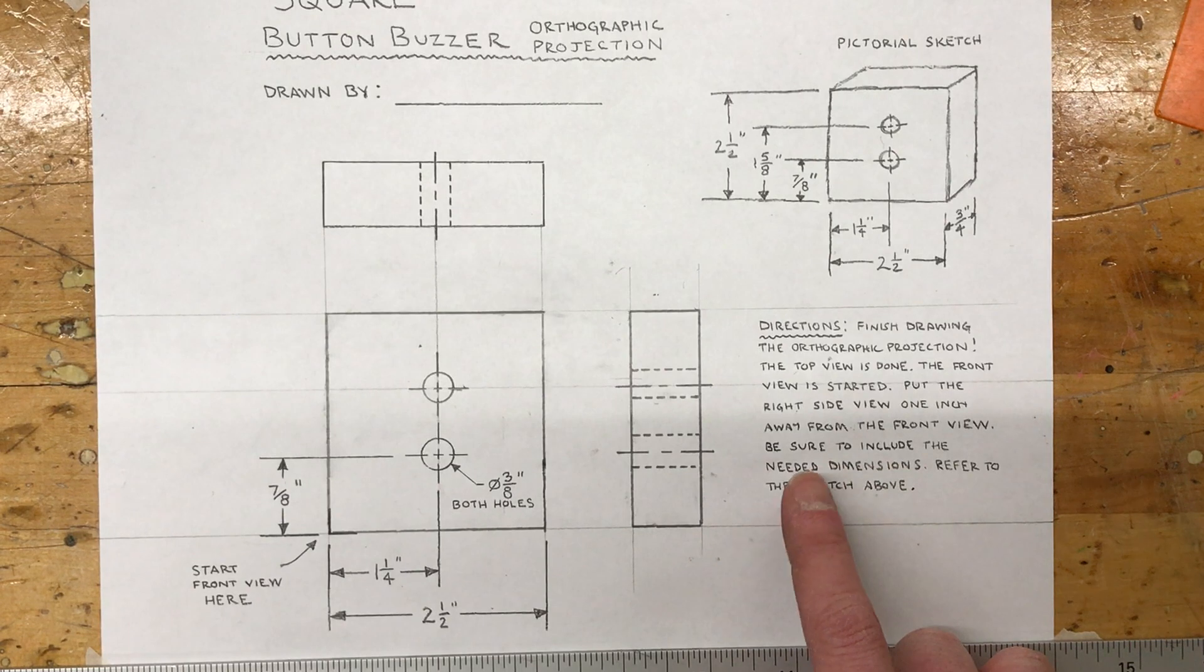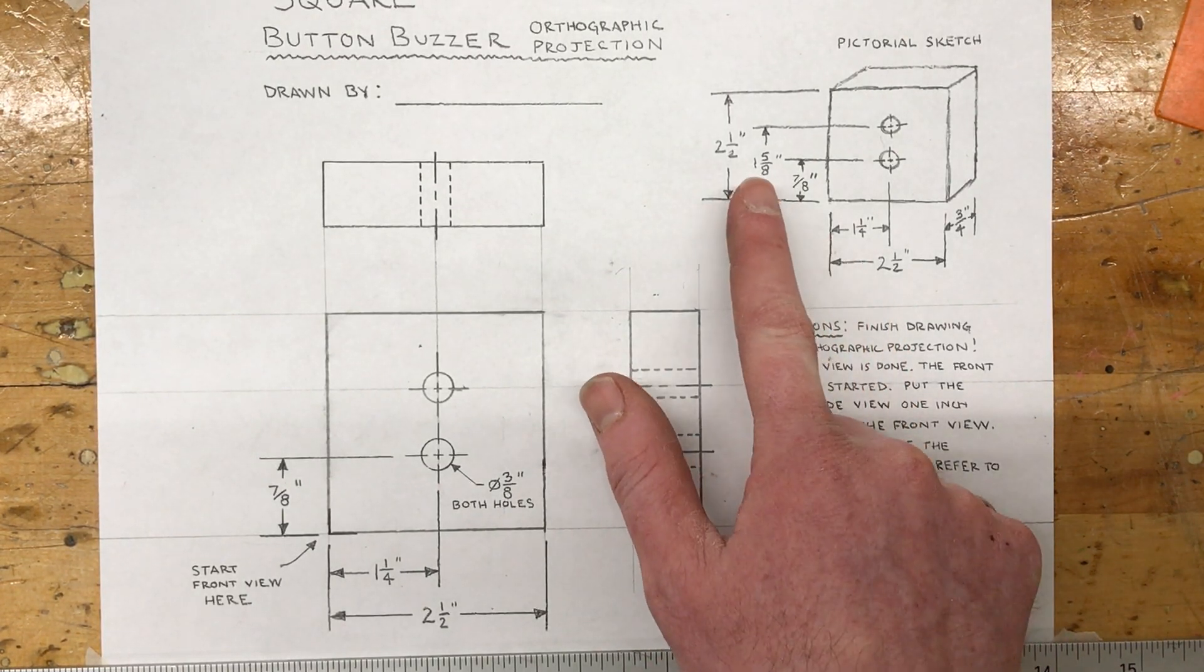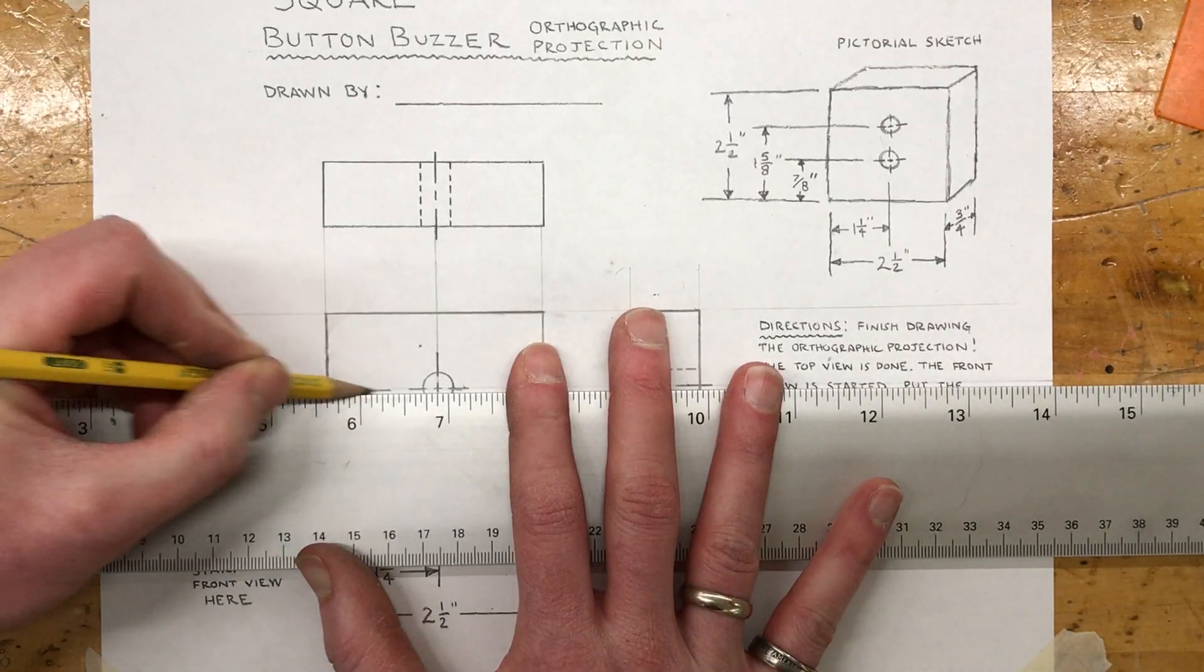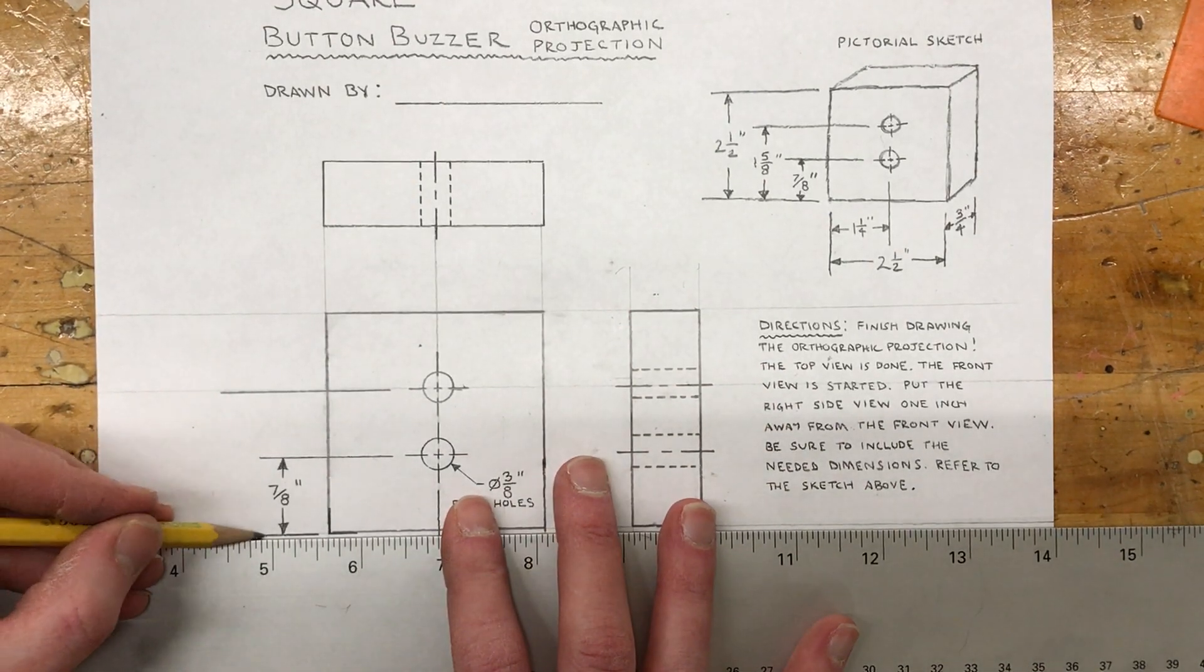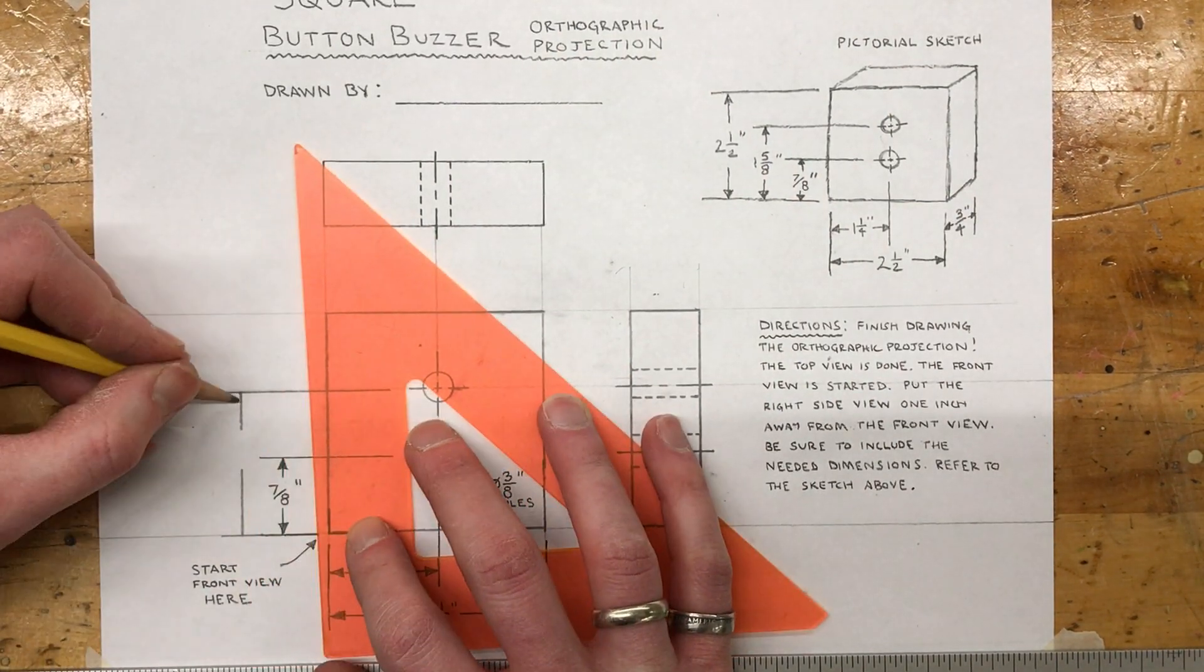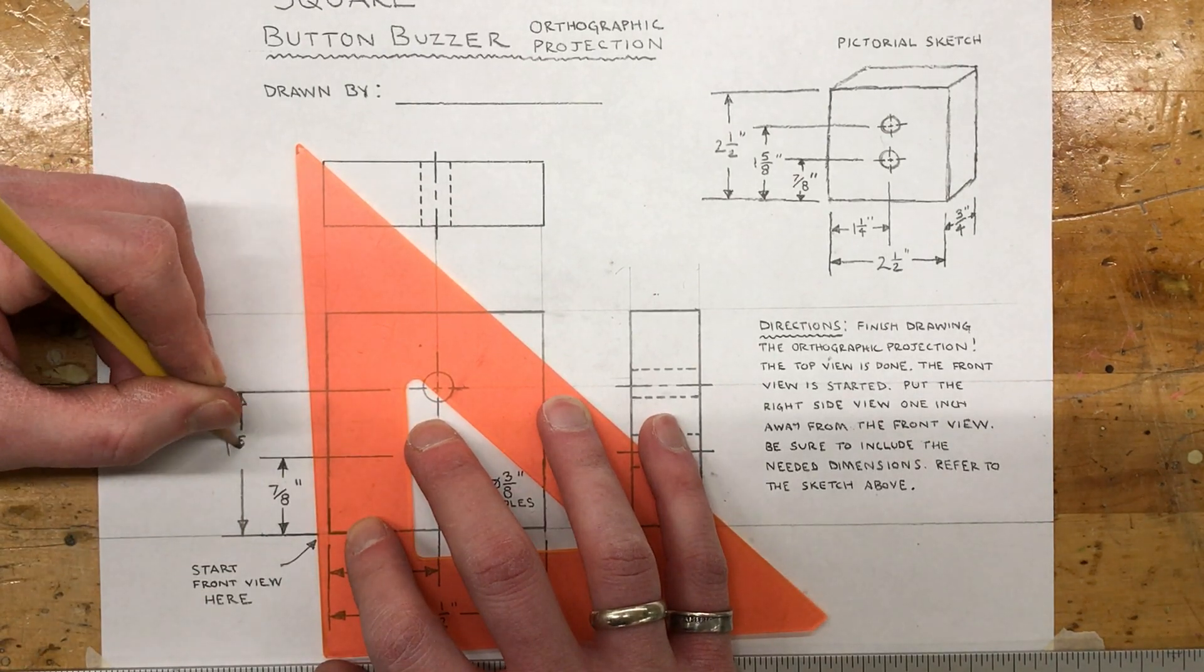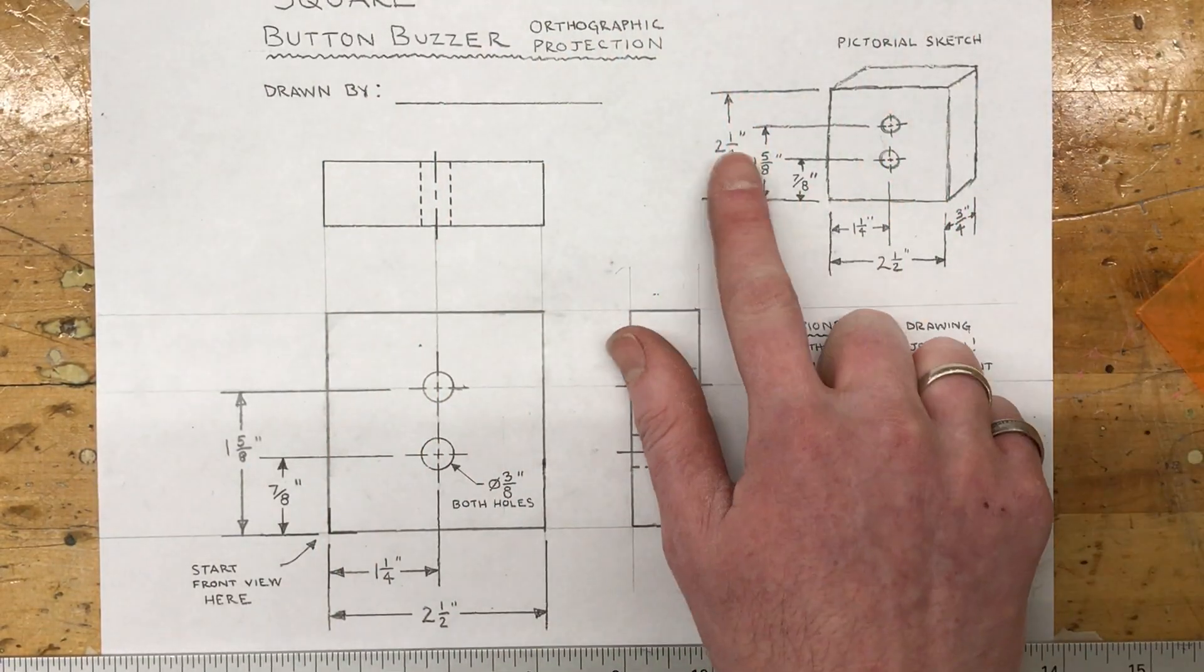It does ask you to include the needed dimensions, so we have the two and a half, the one and a fourth, the seven-eighths. I need to do this one and five-eighths, so I will extend the line from there, extend the line from here, draw my arrows in between. And I think that was one and five-eighths, so I'll write that in there - one and five-eighths of an inch.